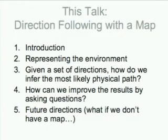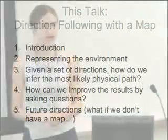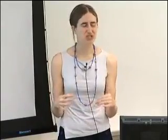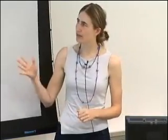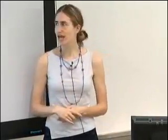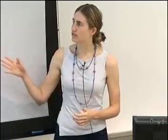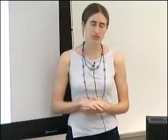In this talk, I'm going to focus on the scenario where the agent interpreting the directions actually has access to a map. One of the first issues is what type of map we have and how we represent the environment. Once we have that, I'll focus on the main bulk of the talk: given a set of directions, how do we figure out what is the physical path associated with those directions? At the end, I'll consider how we can improve results by asking questions, and what we'd do without a map.